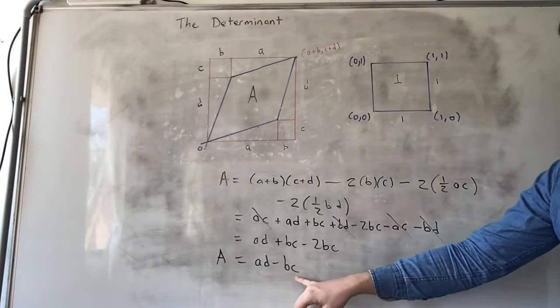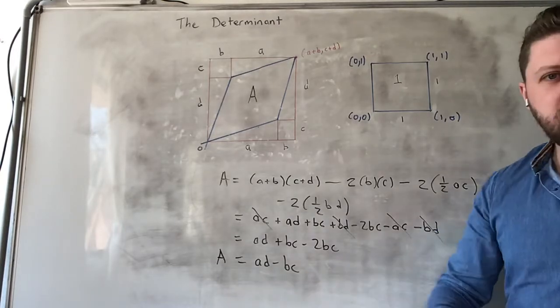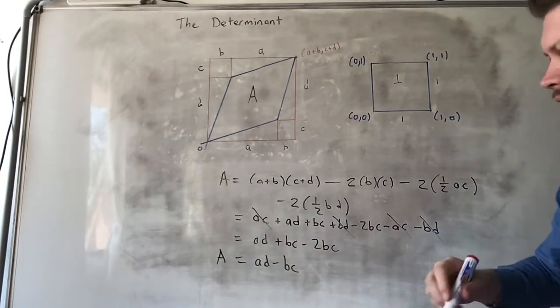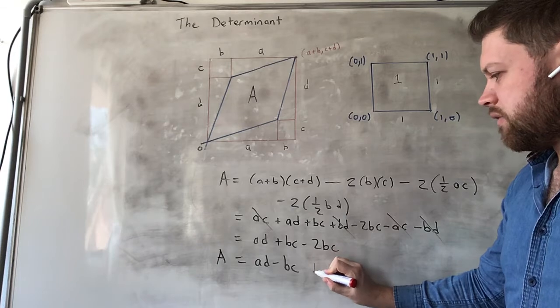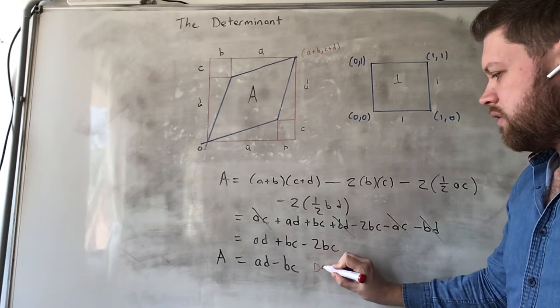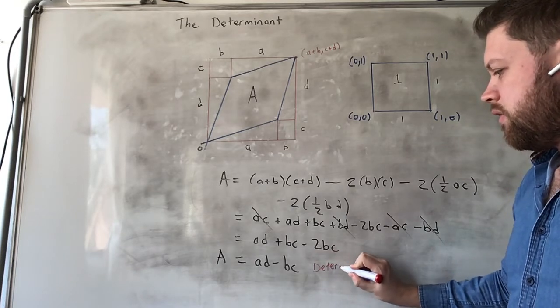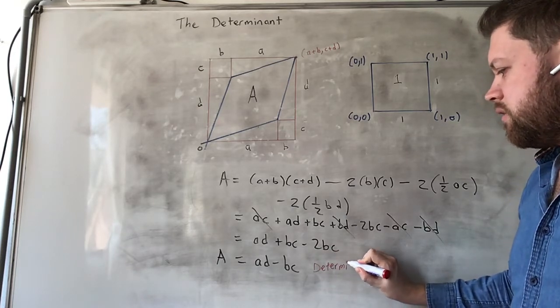This formula, ad minus bc, is given a special name: it's called the determinant.